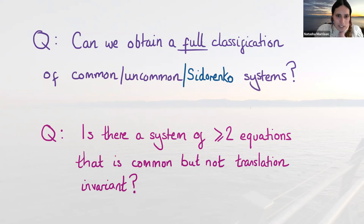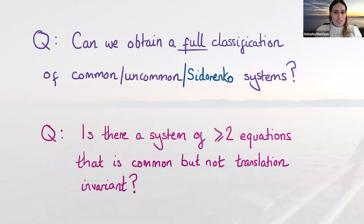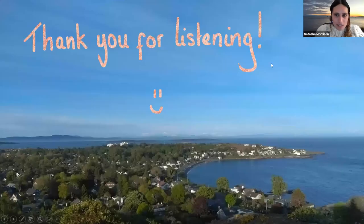One thing we can't even answer: is there a system of multiple equations that is common but not translation invariant — meaning the coefficients don't sum to zero in each equation? That seems like a very basic property we don't understand. My conclusion is that there are many very nice open questions in this area. Several groups of people have proved some nice things, but there are still loads of questions, and any paper you look at has many interesting open directions. We kept a document of about five pages of interesting questions we thought about but haven't solved yet. I'll end there so you have time for questions.